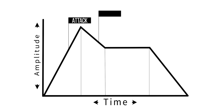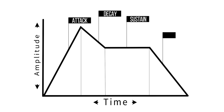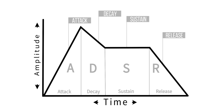The decay is the drop in amplitude of a sound over time from the highest peak point until reaching the sustain level. The sustain is the period of time during which the sound will resonate before it starts to fade out. Then we get to the release, which is basically the time of that fade out — the final reduction in amplitude of a sound over time.